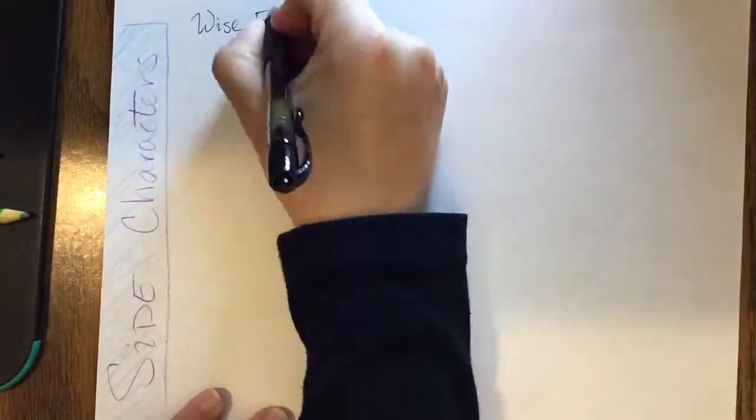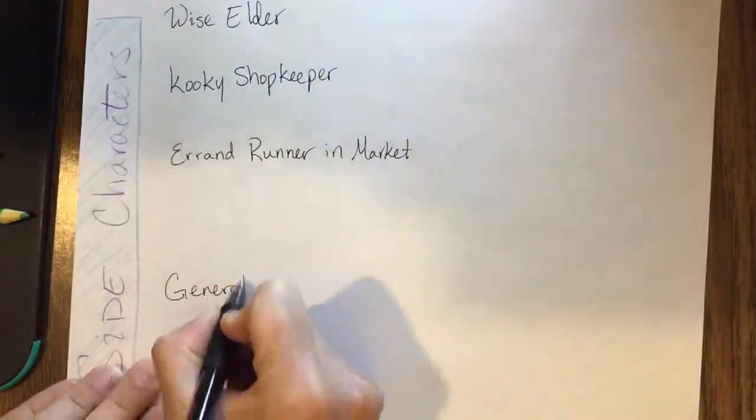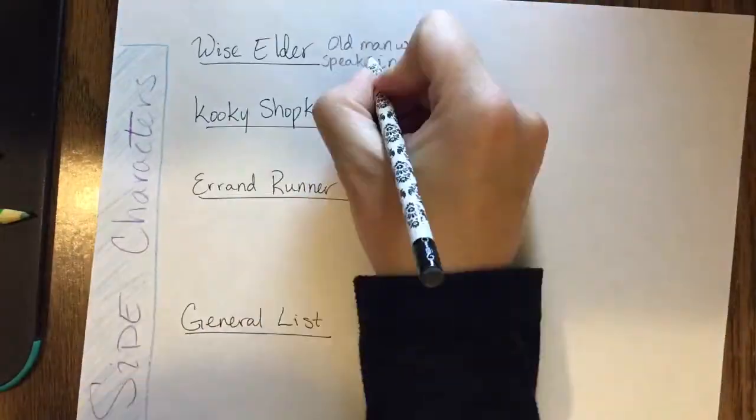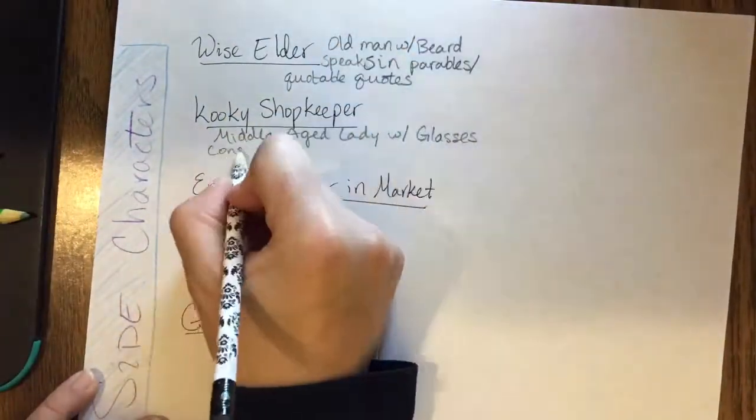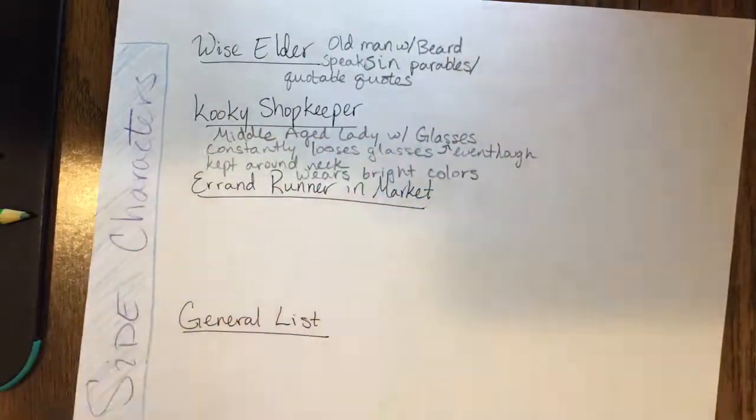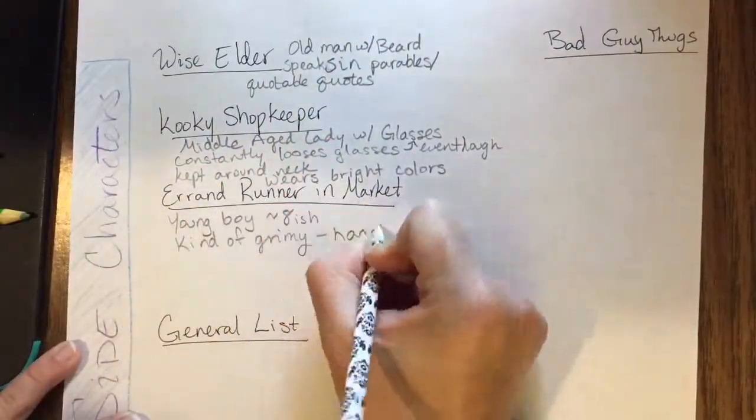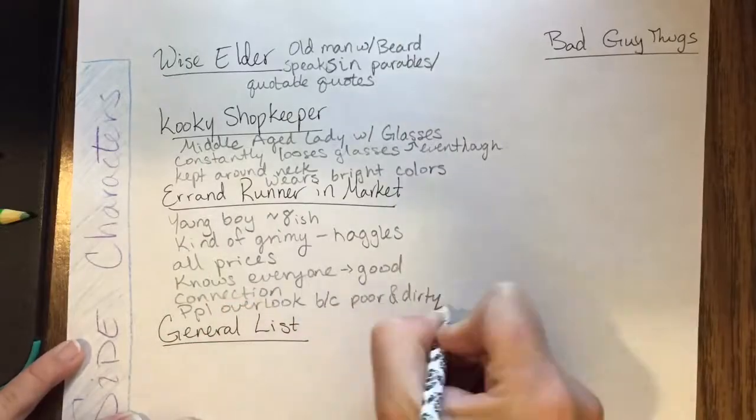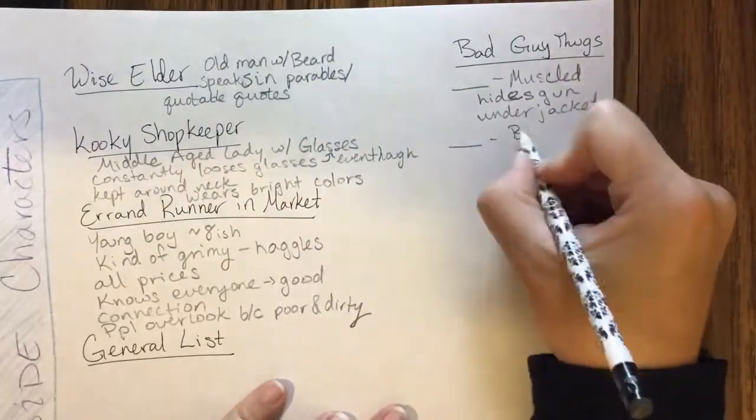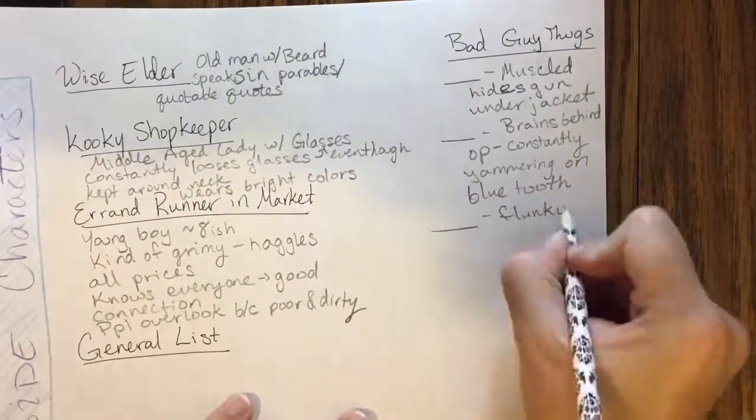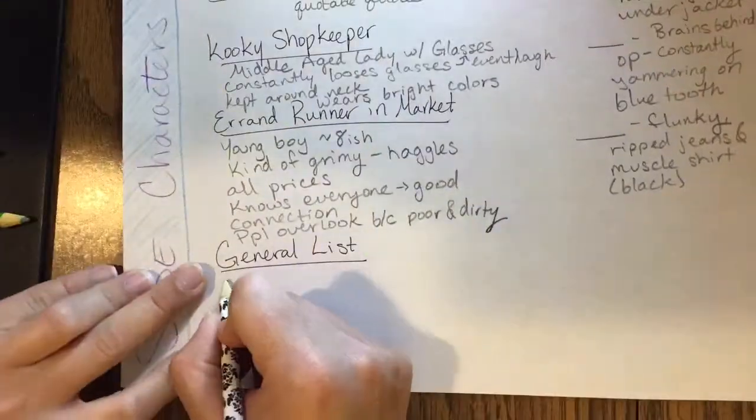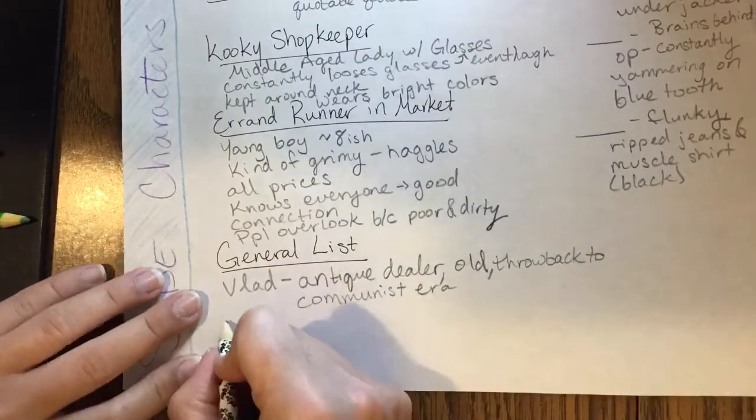So for my side characters I started breaking down what kinds of stereotypical characters did I need to include? So like the elder, the shopkeeper, somebody that runs errands, like just the stereotypes there. And then I started filling in details about them. And I still didn't name my bad guys. I think I have to decide what country my bad guys are from before I start giving them names.